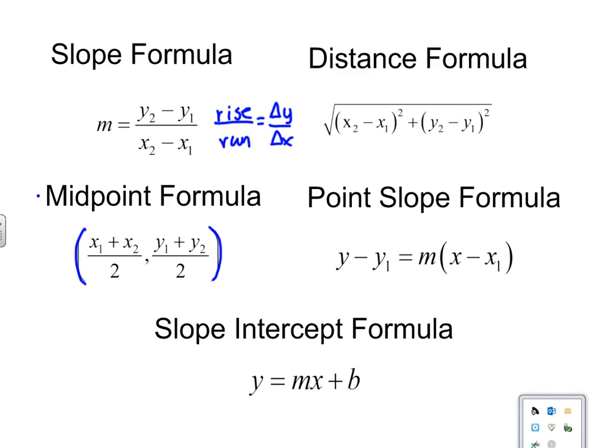Alright, moving along. Distance formula, here we go: x2 minus x1 quantity squared, plus y2 minus y1 quantity squared. Take the square root to find the distance. Take the square root to find the distance. x2 minus x1 quantity squared, plus y2 minus y1 quantity squared. Take the square root to find the distance.